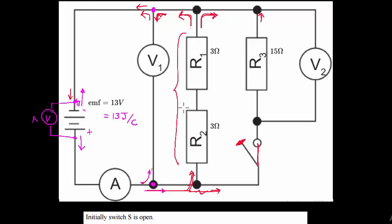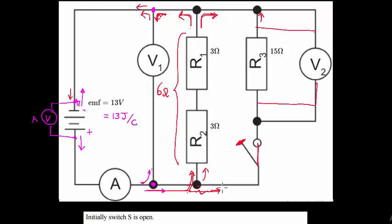I suggest replacing series resistors within each branch with a single equivalent resistance. The first branch has a total resistance of 6 ohms. Even though the voltmeter appears to split the circuit, it's just measuring over this resistor. The second branch, with only one resistor, has a total resistance of 15 ohms.